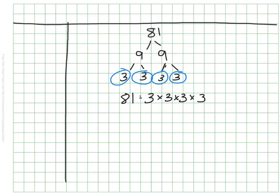How'd you do? I have the prime factorization of 81 as 3 times 3 times 3 times 3. Now what would that look like if we used exponents? Make a guess and try it. Write it down. See what you think.